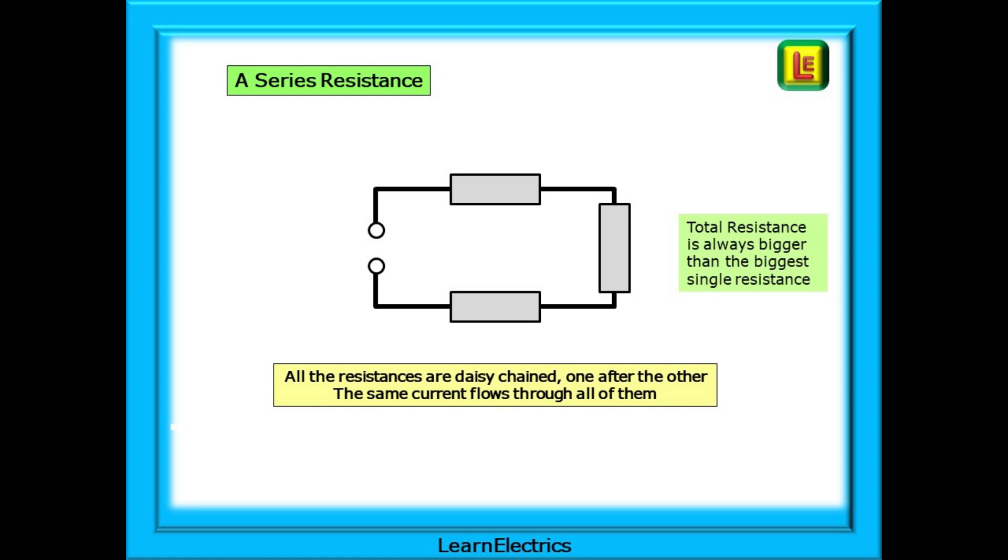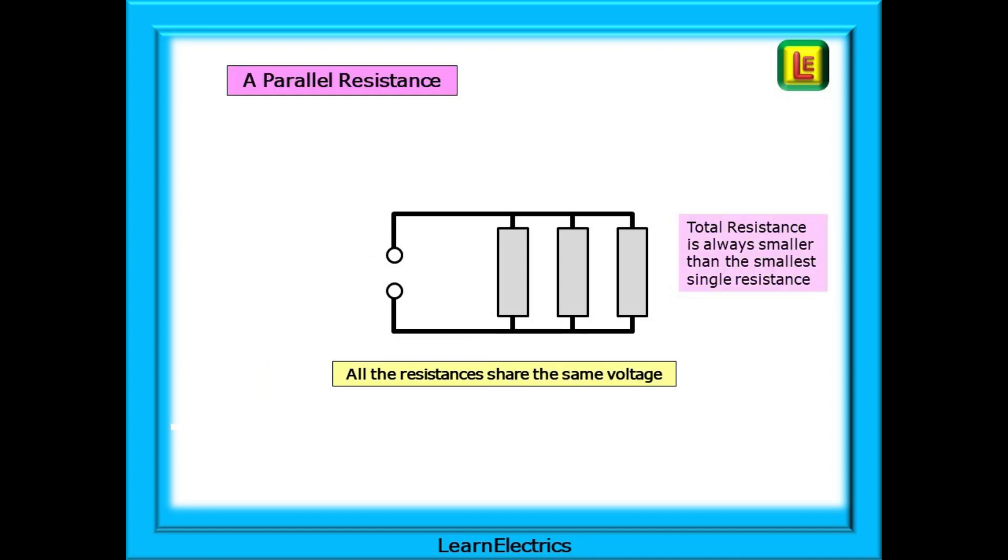And this is a parallel circuit. The resistances are stacked side by side, and the total resistance, sometimes called the effective resistance, is always smaller than the smallest resistance. Add more resistances in parallel, and the effective resistance will go down.